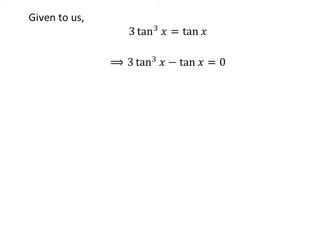Taking tangent of x from the right-hand side of the equation to the left-hand side gives us 3 times cube of tangent of x minus tangent of x is equal to 0. Taking the common factor tangent of x out, we get tangent of x times 3 times square of tangent of x minus 1 is equal to 0.